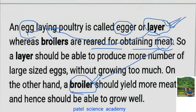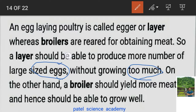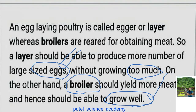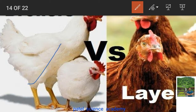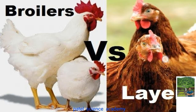A layer should be able to produce more large-sized eggs without growing too much — that is the specialty of layers. On the other hand, a broiler should yield more meat and hence should be able to grow well. So a broiler gives maximum meat and a layer gives more large-sized eggs.